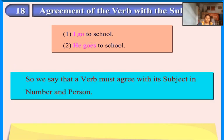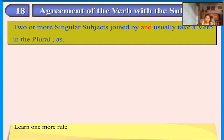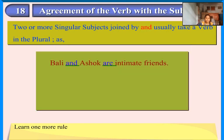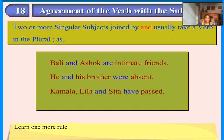So we say that a verb must agree with its subject in number and person. Learn one more rule: two or more singular subjects joined by 'and' usually take a verb in the plural. For example: 'Bali and Ashok are intimate friends.' 'He and his brother were absent.' 'Kamala, Leela and Sita have passed.' 'He and I have done our lessons.'